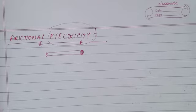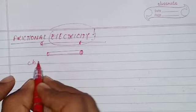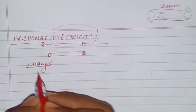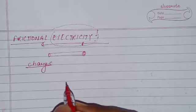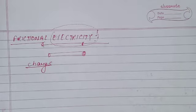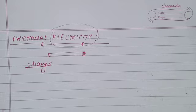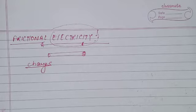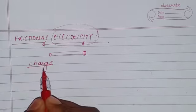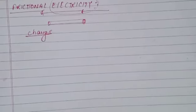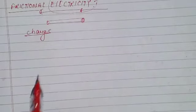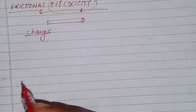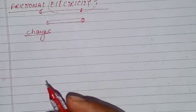The next topic is electric charge. We have discussed electric charge in our previous video, but let us discuss it in detail here. Possible exam questions include: what is electric charge, is it a scalar or a vector, and what is its SI unit? Electric charge is the intrinsic property of the body due to which the force of attraction or repulsion takes place.